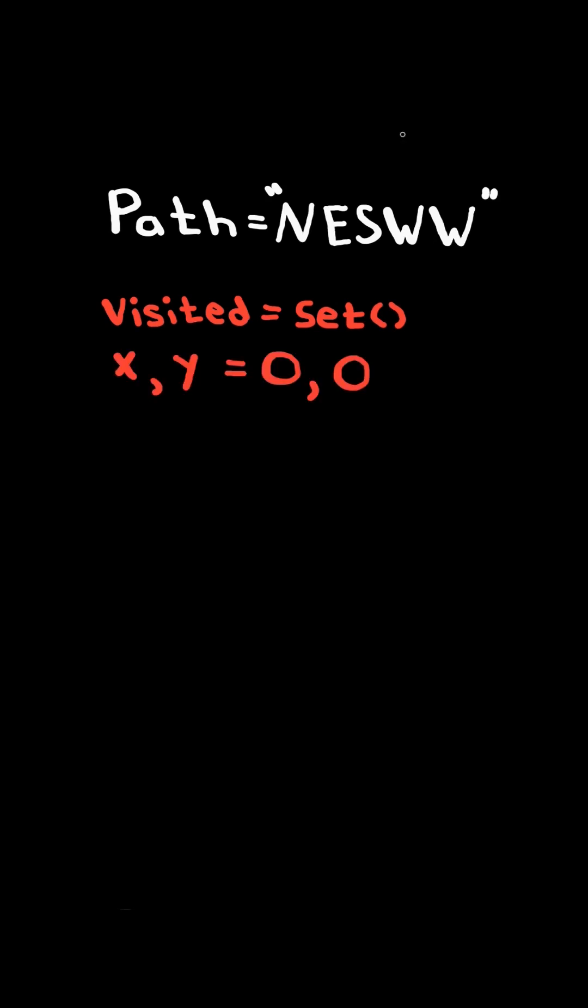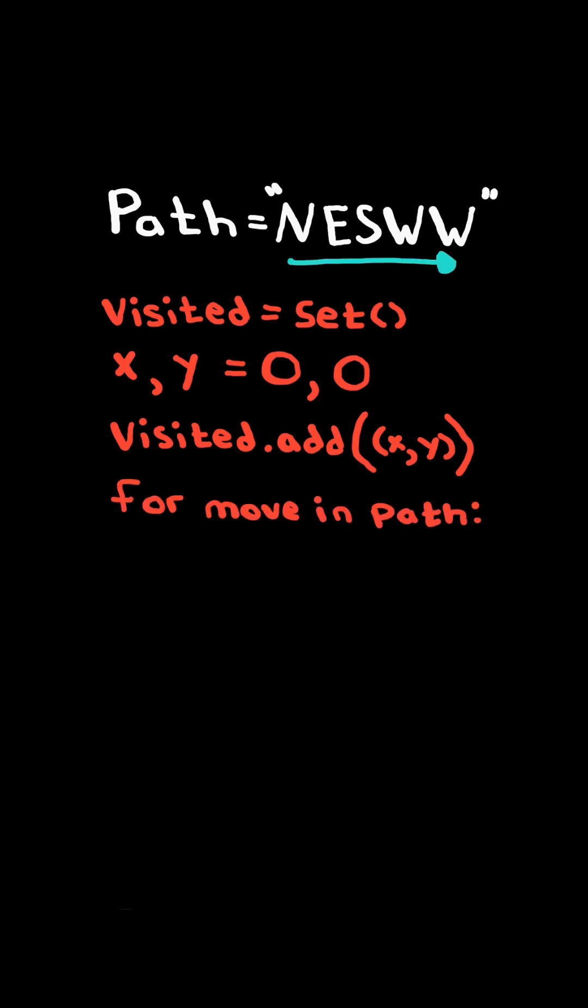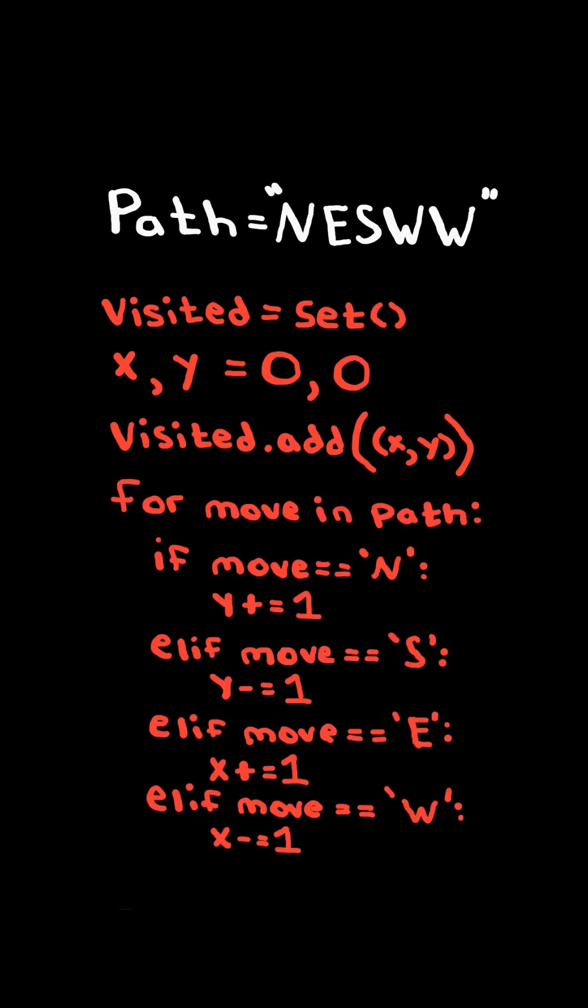First, we will create a set and initialize the origin x and y. We will keep track of the coordinates we have visited. We then iterate through the string and update the points x and y depending on the direction.